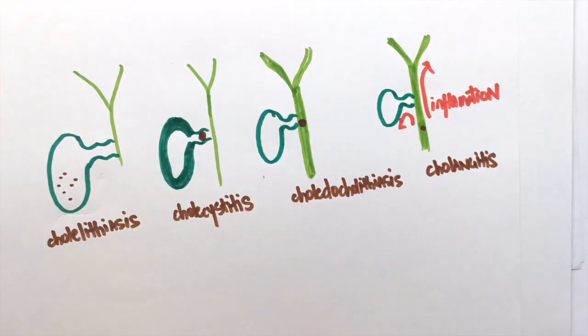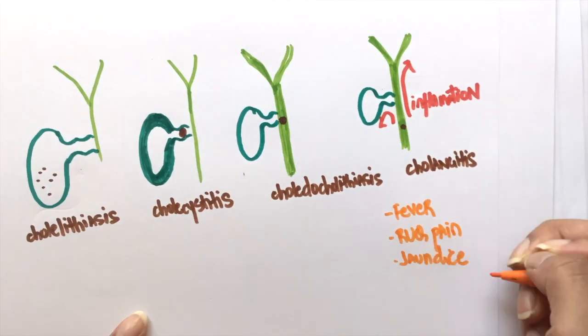Charcot triad is used to diagnose cholangitis. Since there is inflammation, we're gonna see fever. The biliary system is on the right upper quadrant so we will also see right upper quadrant abdominal pain. Since there is obstruction, we're also gonna see jaundice. This is Charcot triad.